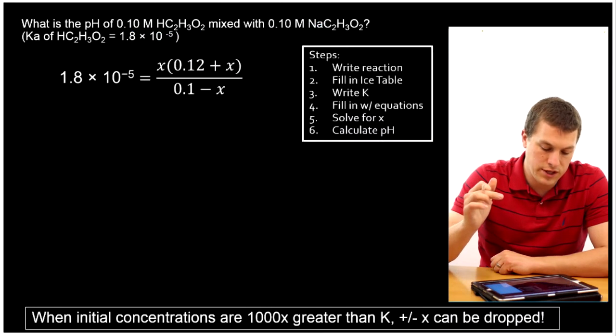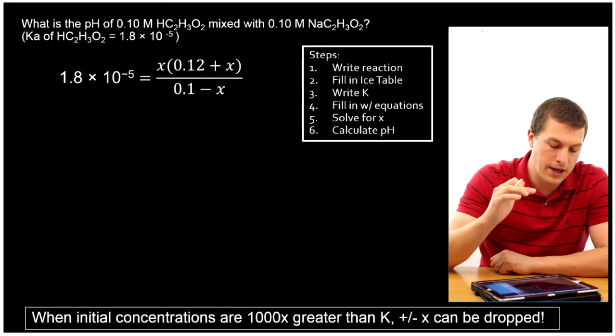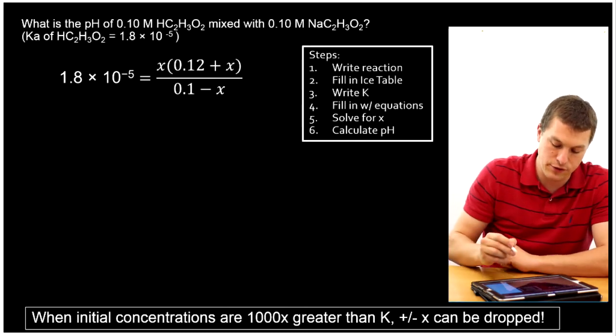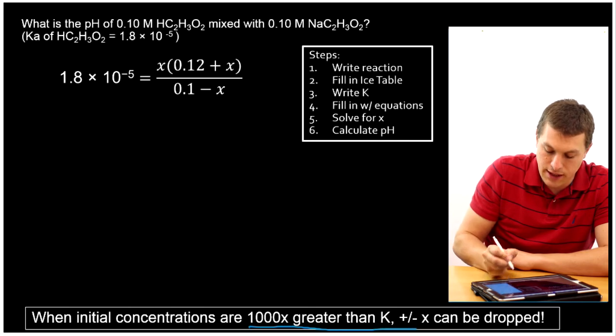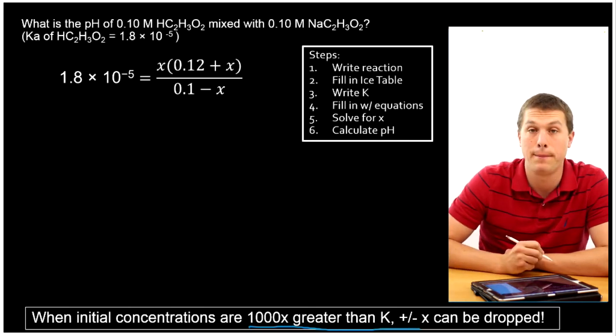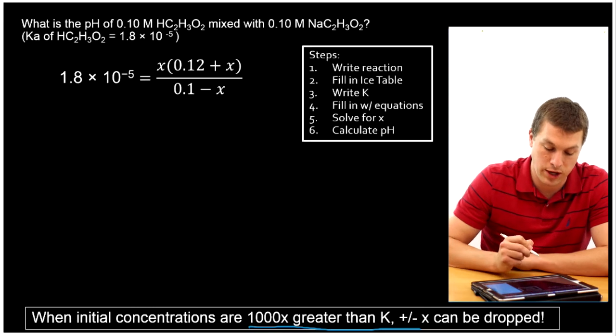So where do we go from here? Well, this is the algebra expression I have. But there's a trick here that's going to help you and save you some time. If your initial concentrations are 1,000 times greater than K, then you can drop the pluses and minuses of X.